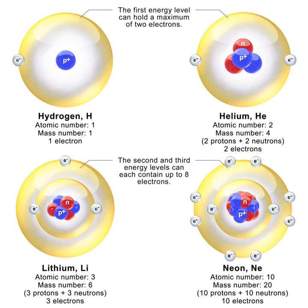Since interacting protons have a mutual electromagnetic repulsion that is stronger than their attractive nuclear interaction, neutrons are a necessary constituent of any atomic nucleus that contains more than one proton. Neutrons bind with protons and one another in the nucleus via the nuclear force, effectively moderating the repulsive forces between the protons and stabilizing the nucleus.